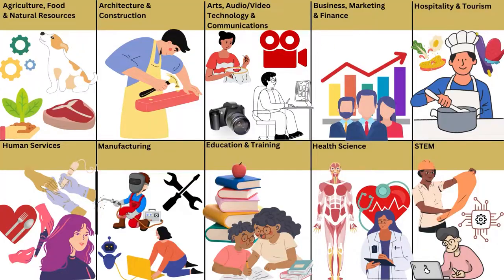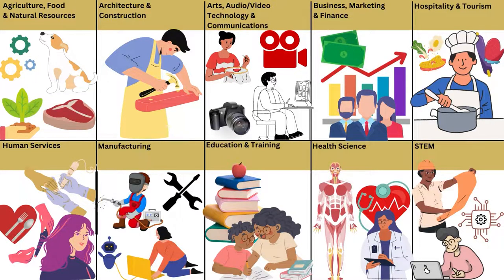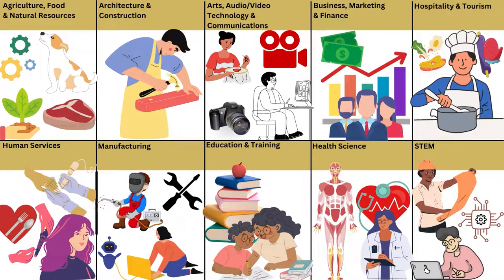There are currently 10 CTE career clusters to choose from: Agriculture, Food and Natural Resources; Architecture and Construction; Arts, Audio, Video, Technology and Communications; Business Management; Hospitality and Tourism; Human Services; Manufacturing; Education and Training; Health Science; and last but not least, STEM. Now we will take a deeper look into each of these career clusters and discuss the different programs of study that they offer.